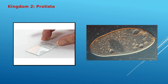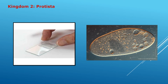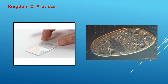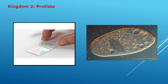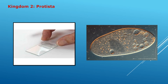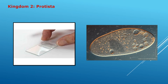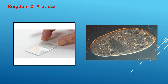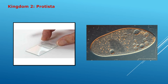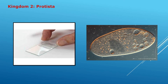For kingdom Protista, we prepare a slide by taking one drop of pond water on a glass slide and observing it under a microscope. When you observe it, you will see an irregular-shaped living organism — that is amoeba.